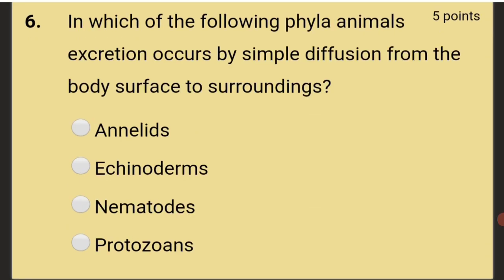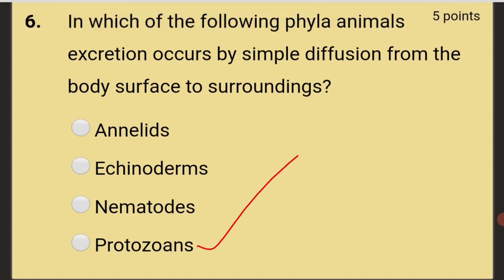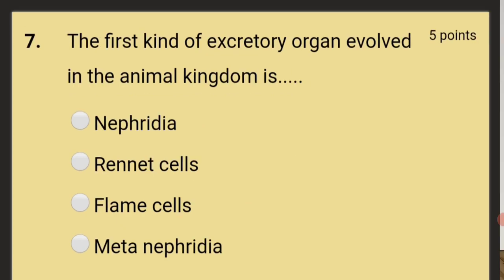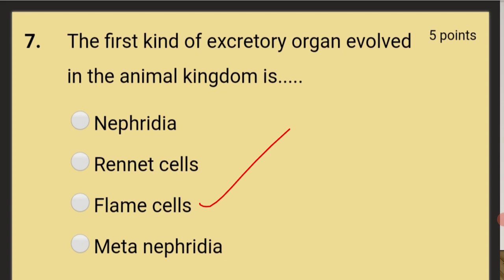In which phyla does excretion occur by simple diffusion from the body surface to surroundings? The answer is protozoans. The first kind of excretory organ evolved in the animal kingdom is flame cells, found in platyhelminthes.